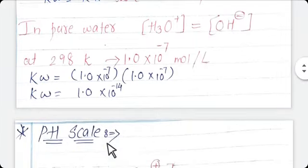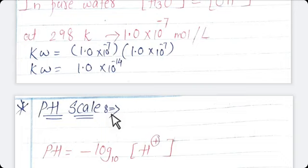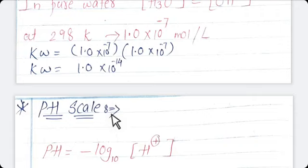The next topic in this chapter is the pH scale. Instead of writing the concentration of hydronium ion in mole per decimeter cube, it is easy and convenient to express it on a logarithmic scale. This is known as the pH scale, or potence of hydrogen. We can define the pH of a solution as the negative logarithm to the base 10 of the concentration of H⁺ ion in solution in mole per decimeter cube.